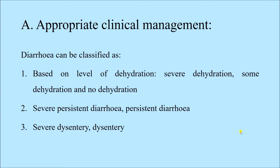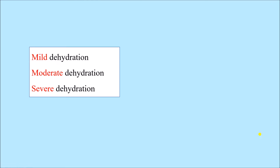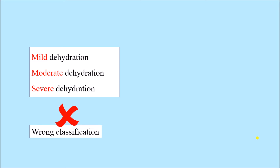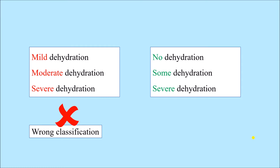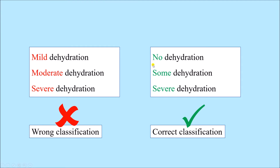Diarrhea can be classified differently. Based on the level of dehydration, we can have severe dehydration, some dehydration, and no dehydration. We can also have severe persistent diarrhea or persistent diarrhea, and severe dysentery and dysentery. Many textbooks mention mild, moderate, and severe dehydration — but remember, this is a wrong classification. The correct classification is no dehydration, some dehydration, and severe dehydration — not mild, moderate, or severe.